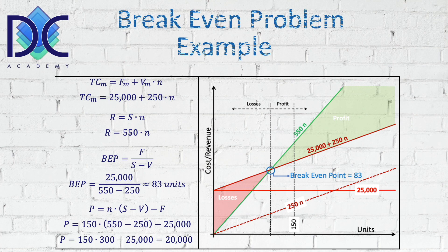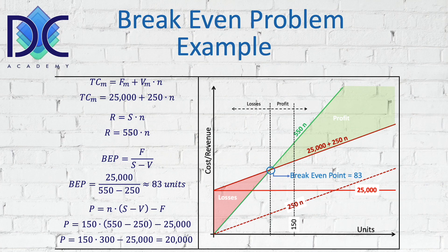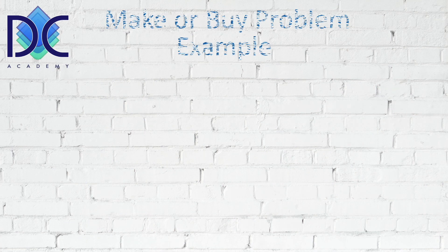For the break-even problem: total cost = 25,000 + 250n, and revenue = 550n. Drawing these in the cost-revenue plane, we find the break-even point is approximately 83 units. For example, at 150 units, the profit is n(S − V) − F = 150(550 − 250) − 25,000 = 20,000.